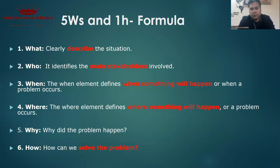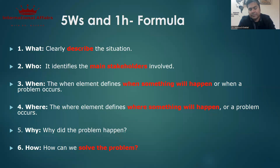The fourth W — Where — defines where the problem occurs: regional security of South Asia, Central Asia, or global security. The fifth W — Why — addresses why the problem happened: because of the abrupt US withdrawal from Afghanistan and US mismanagement. The H — How — is the last element, in which you explain how you can solve the problem.